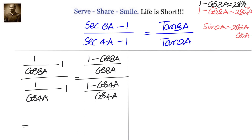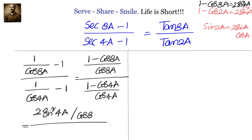Let's write down the formulas. We have 1 - cos8a = 2sin²4a. In the denominator we will have 1 - cos4a = 2sin²2a, divided by cos4a.